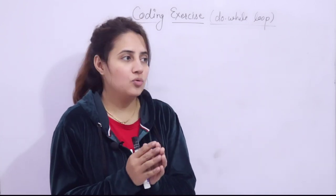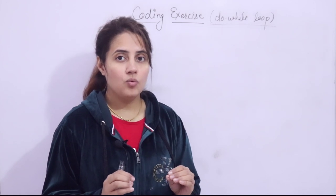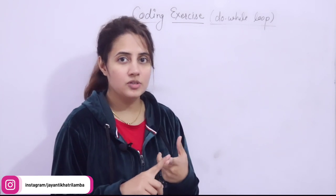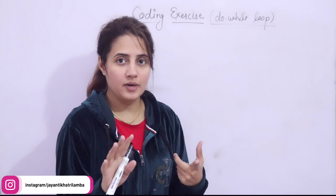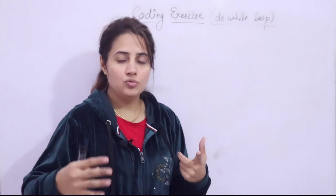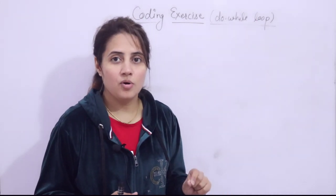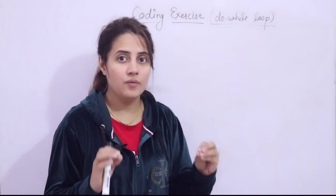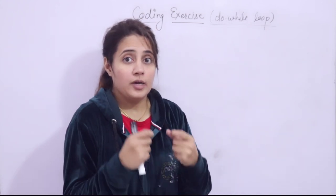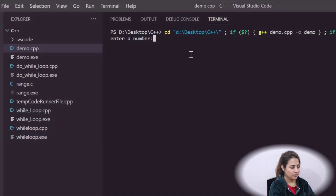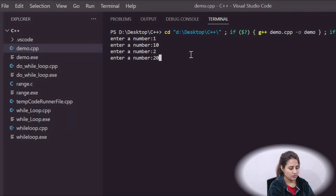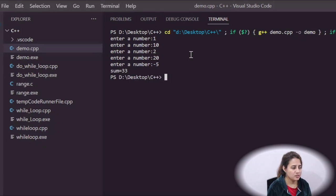The first program: you have to calculate the sum of positive integers. What kind of output do I want? See — it will ask 'enter a number.' Suppose I enter 1, then 10, then 2, then 20, then minus 5. It will print 'sum is 33' — the sum of positive numbers only: 1 plus 10 plus 2 plus 20 is 33. Minus 5 is not included in the sum.